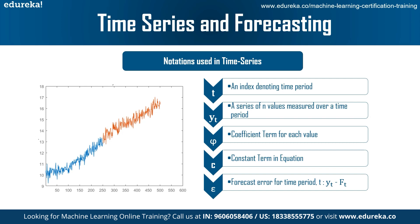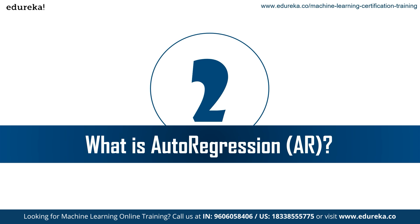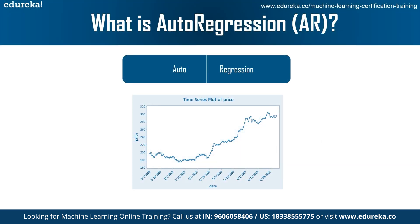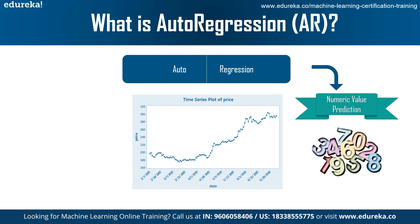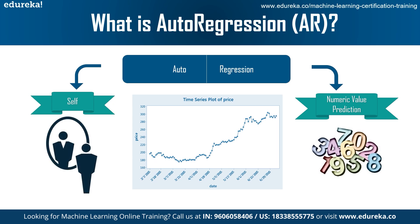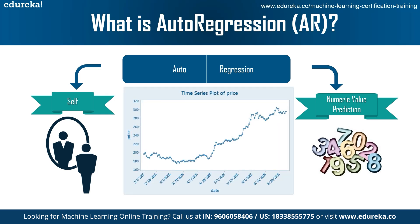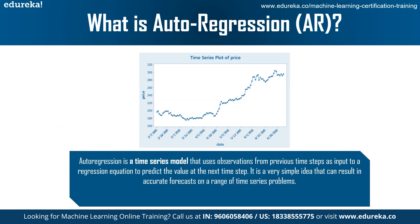Now let's look at what auto regression is. The term auto regression is composed of two terms: auto and regression. Regression refers to the prediction of some numeric value, which can be of any scale. Auto means self — that is, prediction of a numeric value based on its own previous values. No other factors are taken into consideration except its own historical data. Auto regression is a time series model that uses observations from previous time steps as inputs to predict the same characteristic at the next time step.